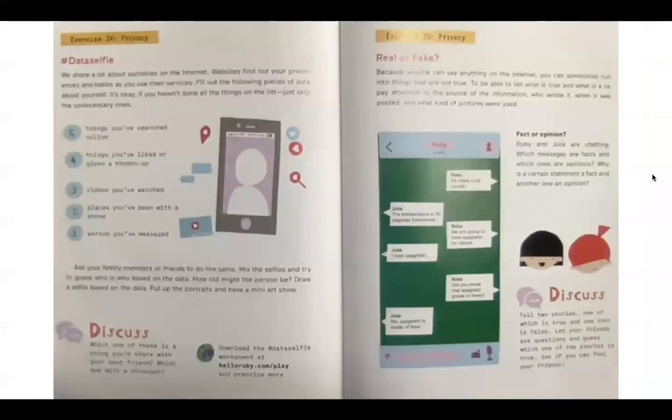Exercise 24. Privacy. Data selfie. We share a lot about ourselves on the internet. Websites find out your preferences and habits as you use their services. Fill out the following pieces of data about yourself. It's okay if you haven't done all the things on the list. Just skip the unnecessary ones.